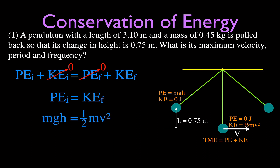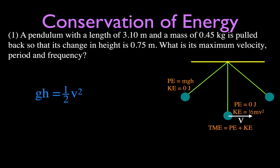We're looking for velocity, which is inside the kinetic energy equation. We set the two equal to each other and solve for velocity. The masses are the same and cancel out, leaving us with G times H equal to one-half V squared, since potential energy is MGH.